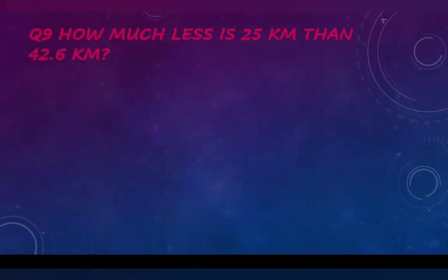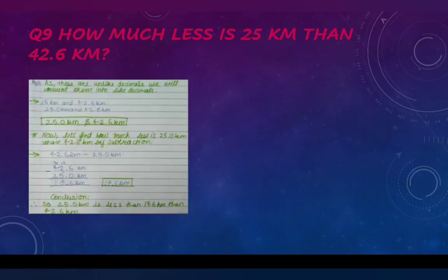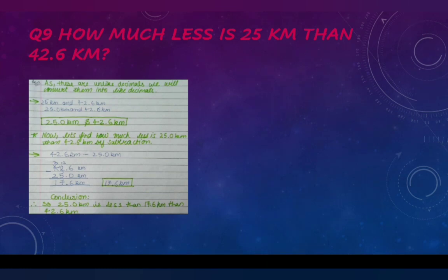How much less is 25 km than 42.6 km? We need to subtract. Since these are unlike decimals, we convert them to like decimals: 25 km becomes 25.0 km. Subtracting: 42.6 − 25.0 = 17.6 km. So 25.0 km is 17.6 km less than 42.6 km.